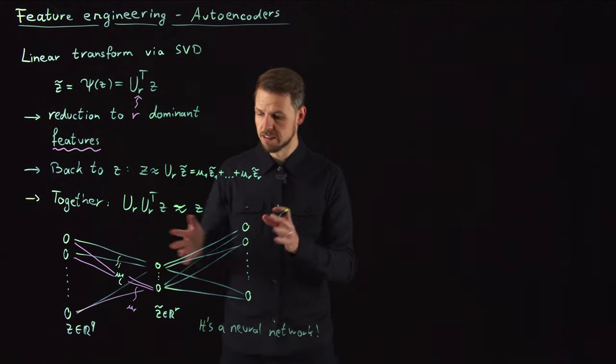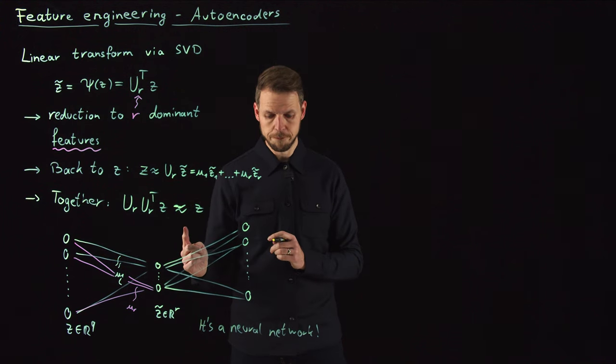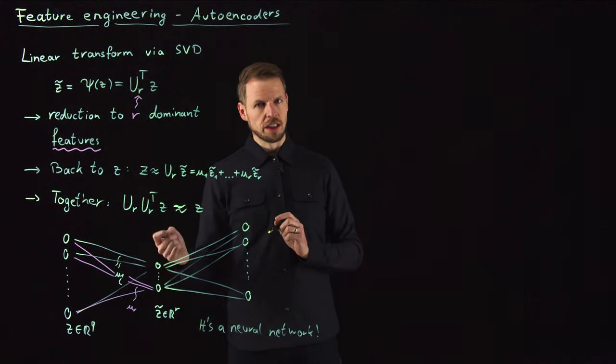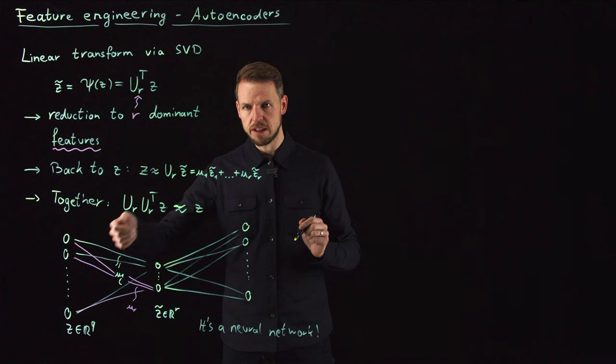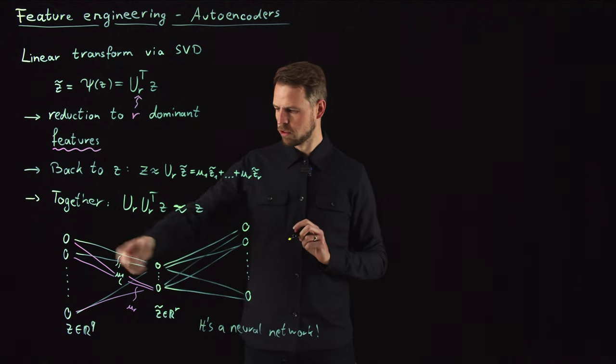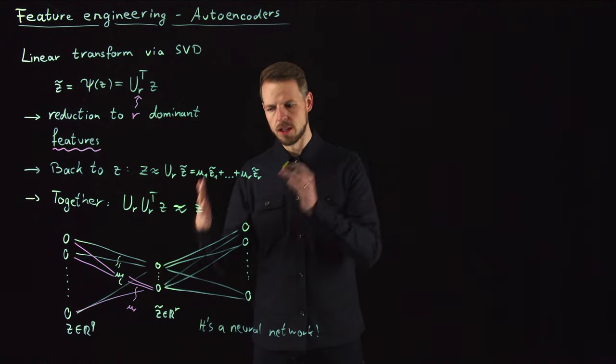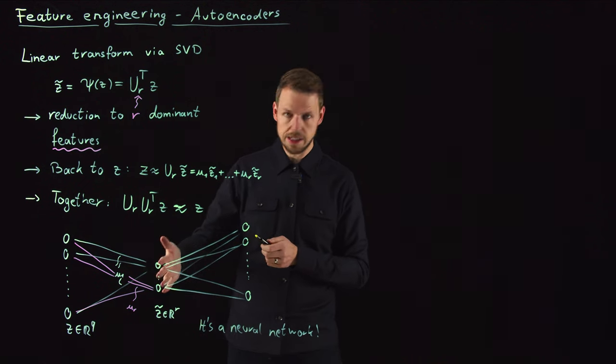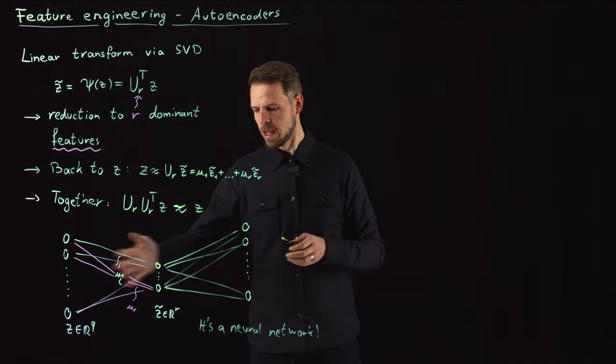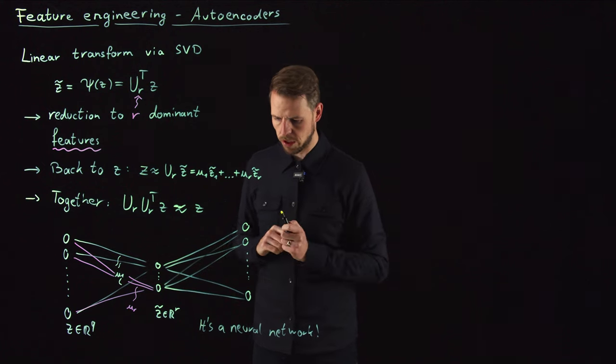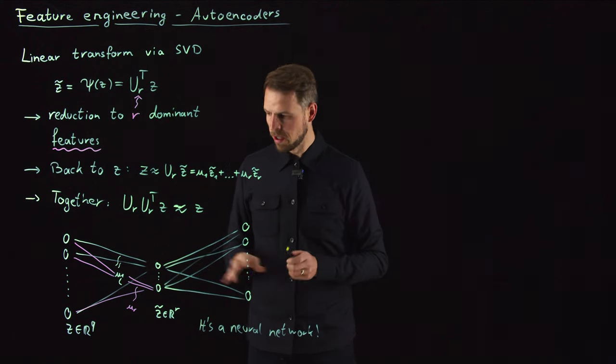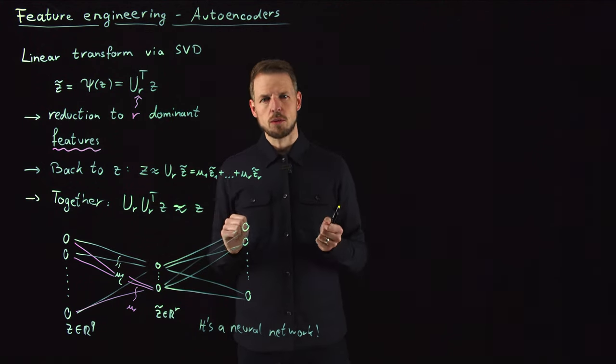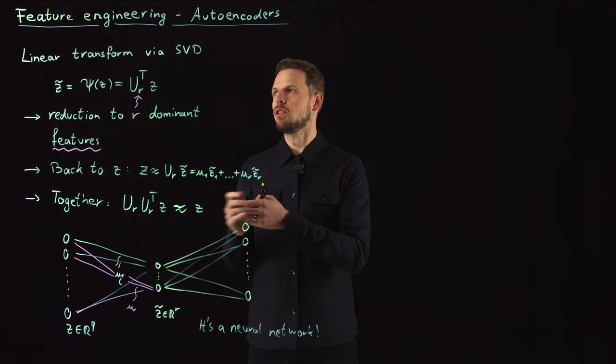A simple one because we have a single hidden layer. We don't have an activation function, or the activation function is the identity function. So a one-hidden-layer neural network or simply a linear neural network. We omitted the nonlinearity. However, it is a neural network. So this was a lengthy introduction.